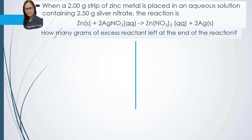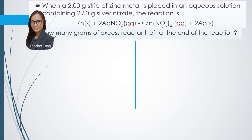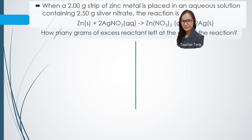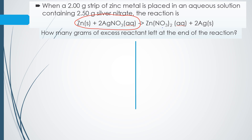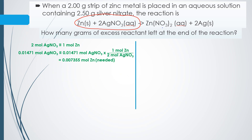The limiting reactant is the reactant completely consumed in a reaction and limits the amount of products produced. Besides limiting the amount of products, it also determines how much excess reactant will be reacted. In this question, we want to find the mass of excess reactant left at the end of the reaction. To find this, we use the limiting reactant, silver nitrate, and compare it with the excess reactant, zinc. From the balanced equation, 2 moles of silver nitrate require 1 mole of zinc. We have 0.01471 mol of silver nitrate, so we only need 0.007355 mol of zinc.